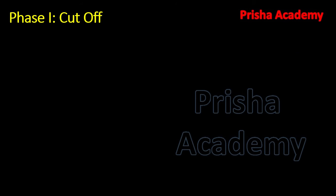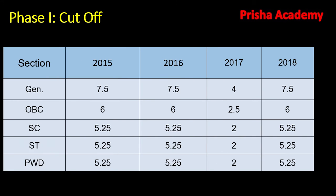First we will see the cutoff of the quantitative section for the last four years. In 2015, the cutoff was 7.5 out of 30 total marks, with 30 questions. In 2016 and 2018 the cutoff was also around 7.5, which is around 25 percent. For OBC it was 6, and for SC/ST and PWD it was 5.25.